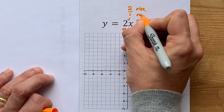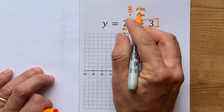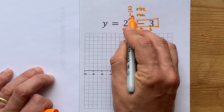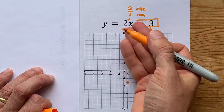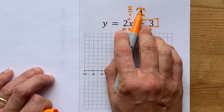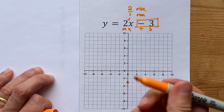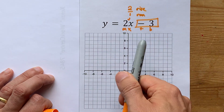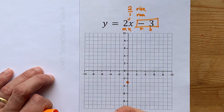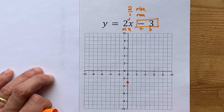Writing it as a fraction, I do so that I can emphasize there is a rise and a run. Slope is rise over run, and here we're going to rise by 2 — that means going up 2 — and run by 1, which means going to the right by 1.